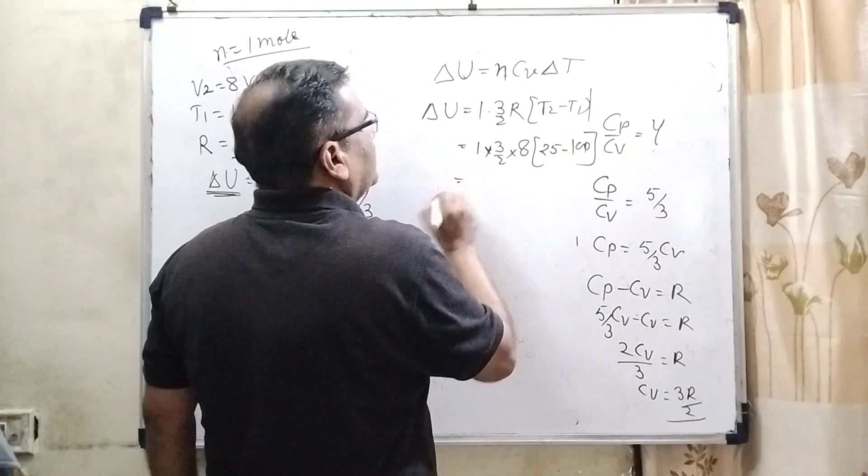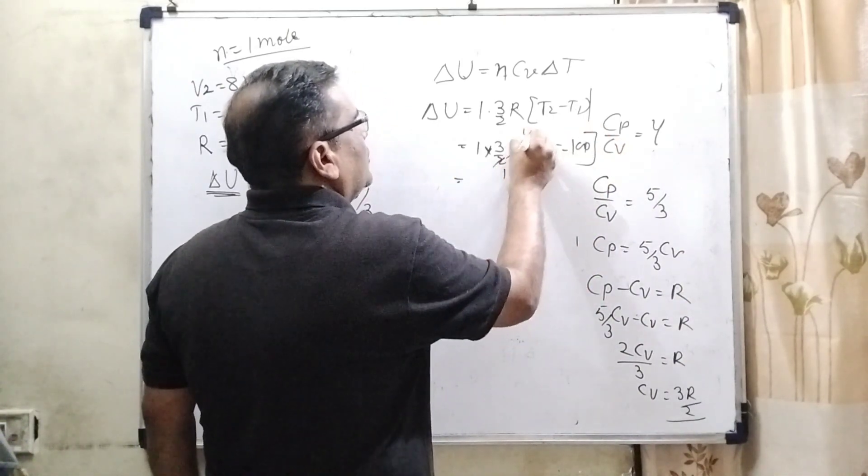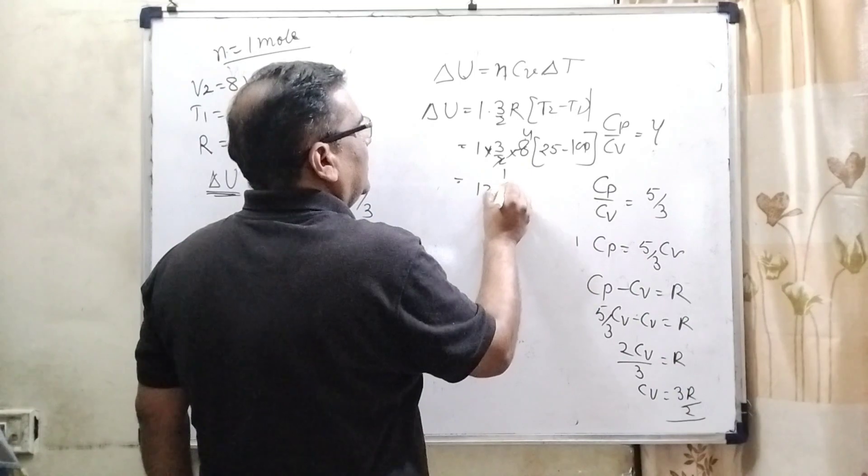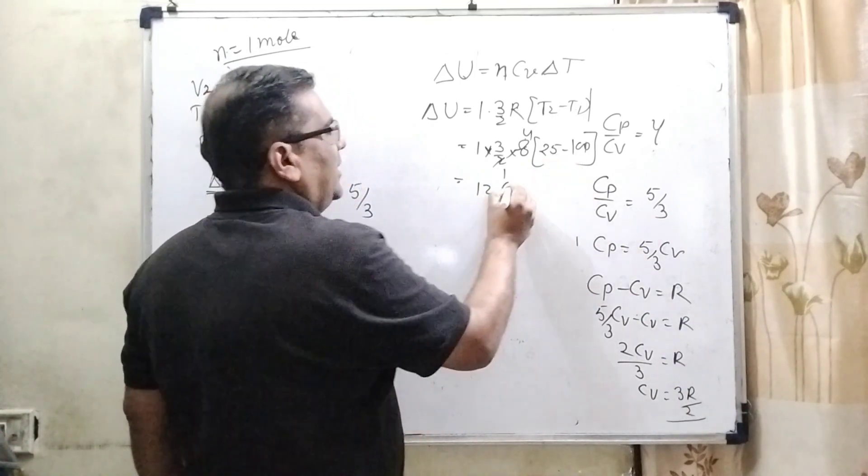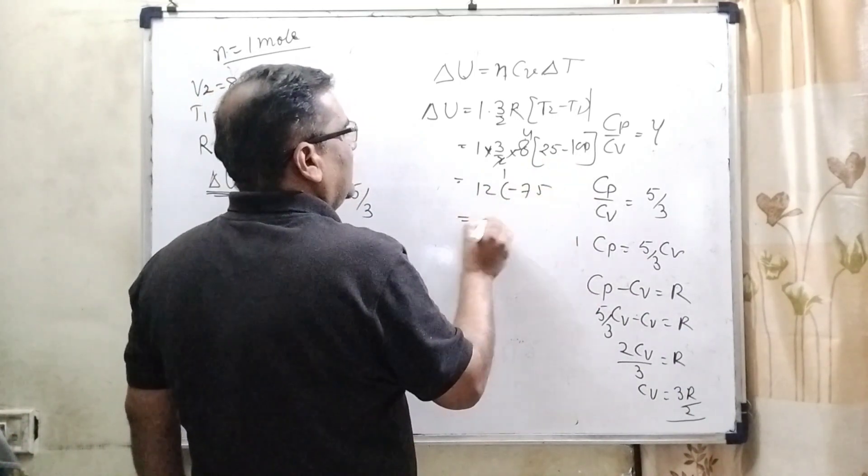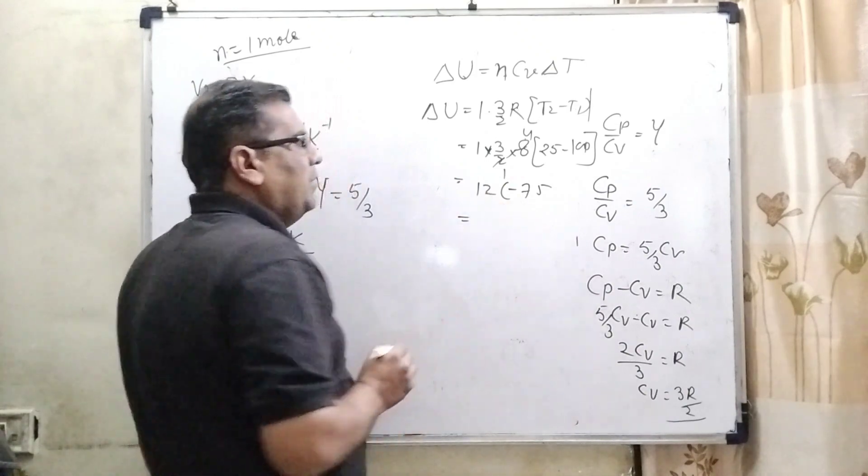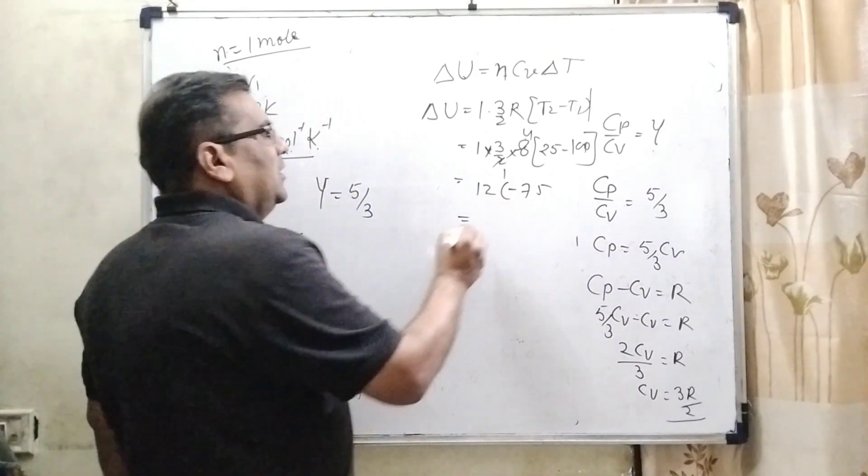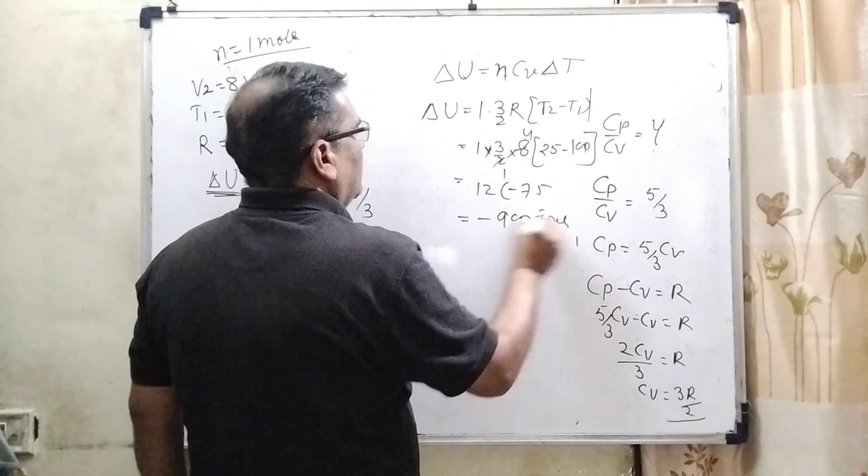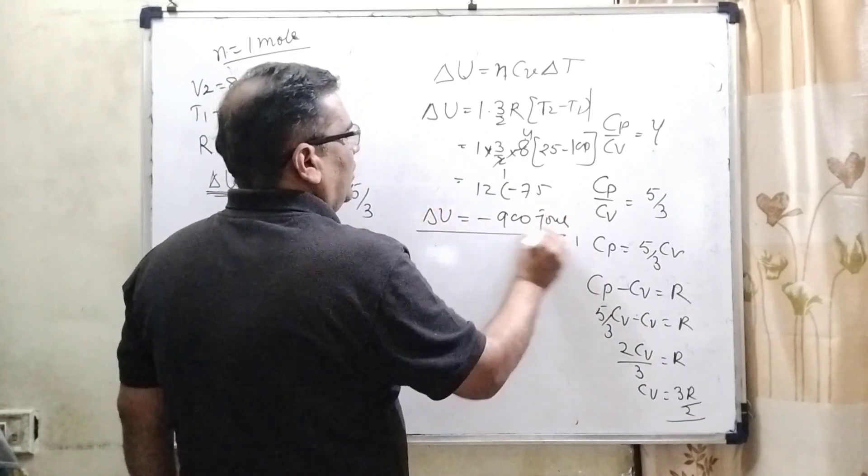So here 2 ones are 2, 2 fours are 8, fours are 12. And 25 minus 100 that is minus 75. And 12 into minus 75 that is minus 900 joule internal energy.